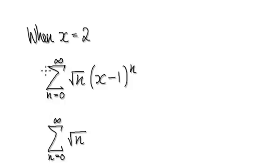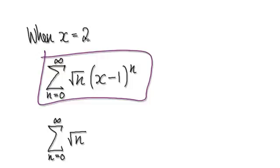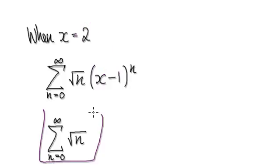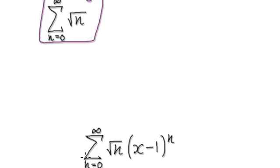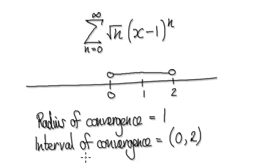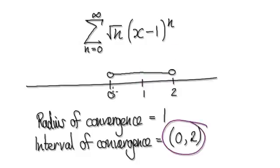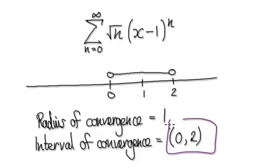When x = 2, going back to the original series, we put 2 in — 2 minus 1 gives 1 — and again this series diverges; you should be able to tell by the nth term test. So overall, our radius of convergence is 1, because the radius is 1 and it's centered at 1. The interval of convergence is the open interval (0, 2), excluding x = 0 and excluding x = 2.